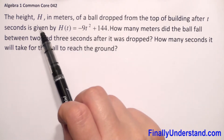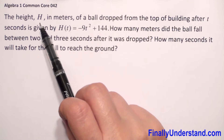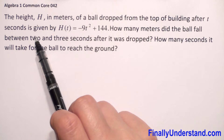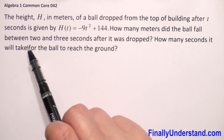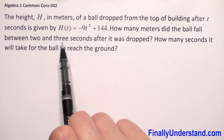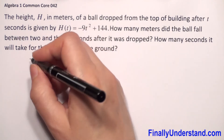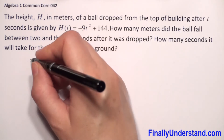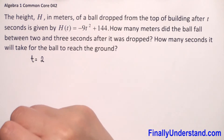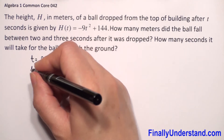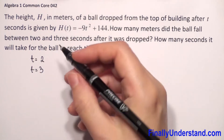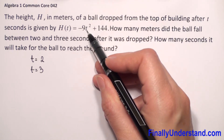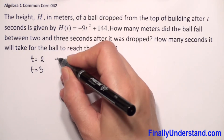Let's read the first sentence. We have that h is the height in meters and t is in seconds. So we need to find how many meters the ball fell between 2 and 3 seconds. We have to find the height at the second second and at the third second, by substituting t first by 2 and next by 3.